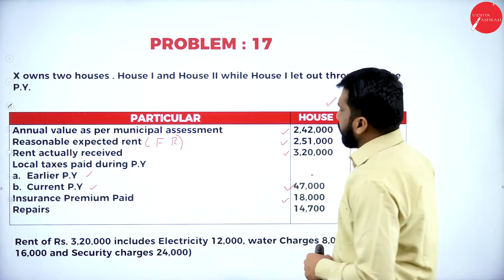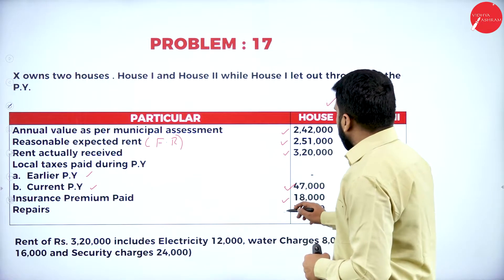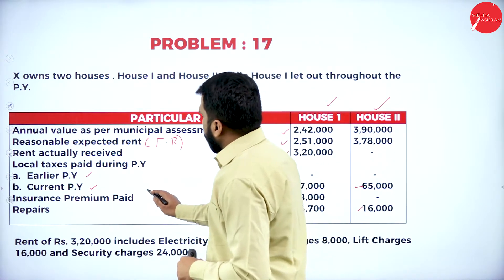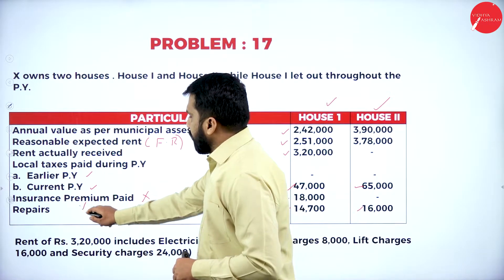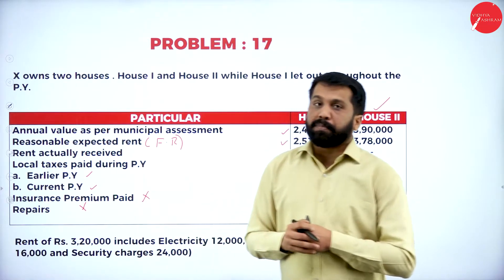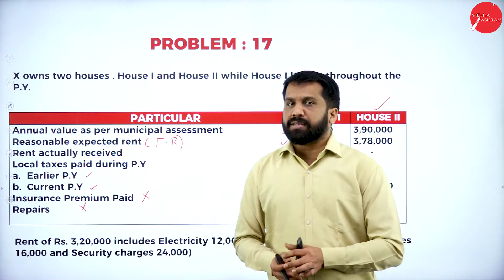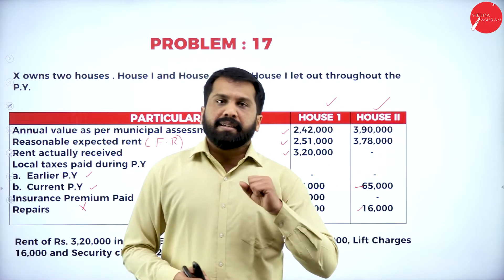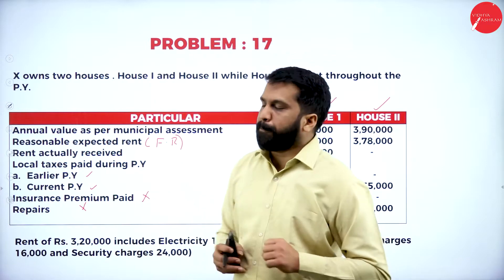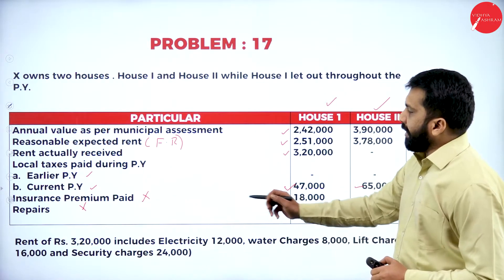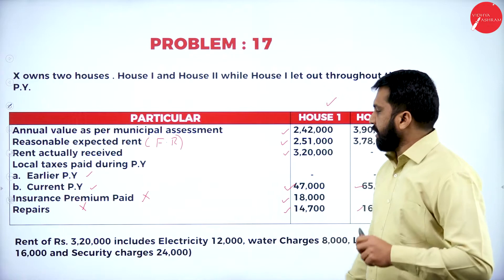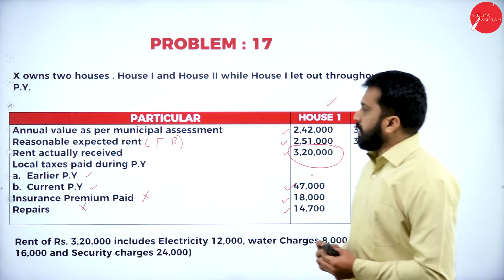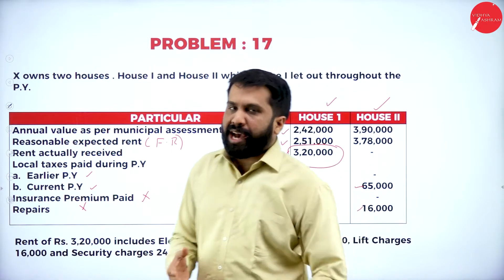Even though insurance premium paid is ₹18,000 and repairs is ₹14,716, we should not consider these. We are not supposed to take insurance premium and we are not supposed to take repairs either, because these expenses are not part of income from house property. The rent collected is ₹3,20,000.